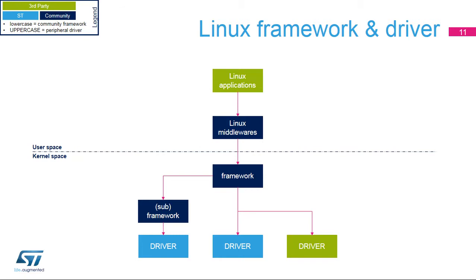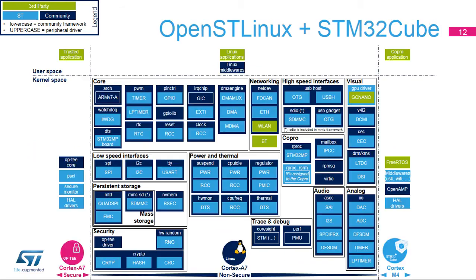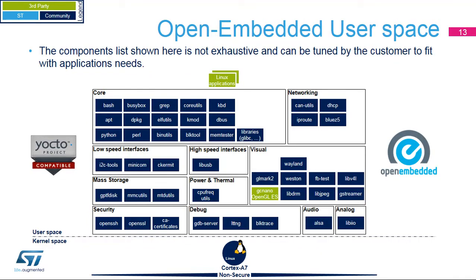This slide shows the STM32MP1 peripheral drivers and their respective Linux frameworks. The framework names are written in lowercase, and the peripheral driver names are written in uppercase. The color code indicates the origin of the source code for each component: third-party, community, or STMicroelectronics. This view is also available on ST Wiki. The STM32MPU Embedded Software Distribution is built thanks to the OpenEmbedded build framework for embedded Linux platforms. Feel free to explore the ST Wiki and OpenEmbedded online documentation to customize this setup for your needs.